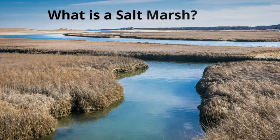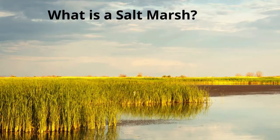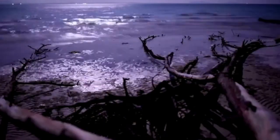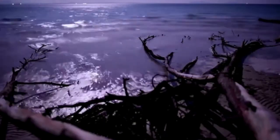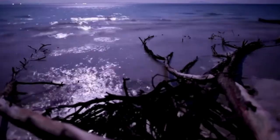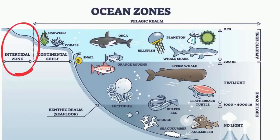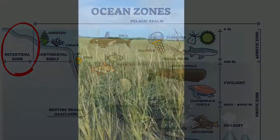What is a salt marsh? A salt marsh is a coastal wetland that is dominated by salt-tolerant plants. Salt marshes are coastal wetlands that are flooded and drained by tides. They're found in the intertidal zone.